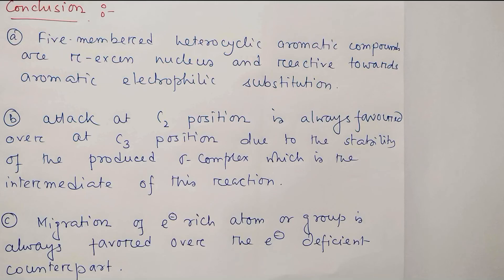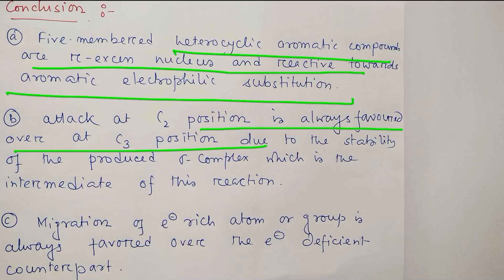So in conclusion, what have we learned today? We have learned that five-member heterocyclic aromatic compounds are pi-excess nucleus and reactive towards aromatic electrophilic substitution due to this pi-excess nature. Attack on the C2 position of this five-member heterocyclic compound is always favored over C3 position due to the stability of the produced sigma complex.